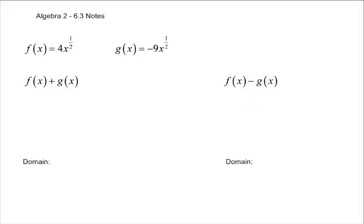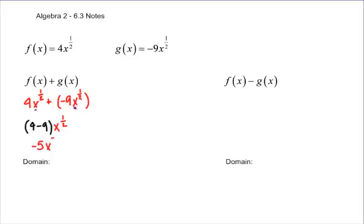Here are more examples of adding two polynomials. We have 4x to the 1/2 plus negative 9x to the 1/2. Since these two terms are the same, we can factor out the coefficients: 4 minus 9, times x to the 1/2. What is 4 minus 9? It's negative 5, so we get negative 5x to the 1/2. The domain would be all numbers you can put in for x — since x to the 1/2 is the square root of x, the domain starts from 0.